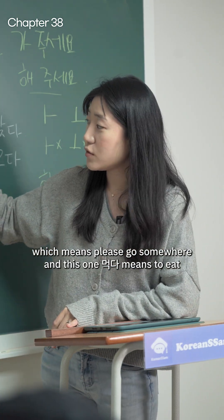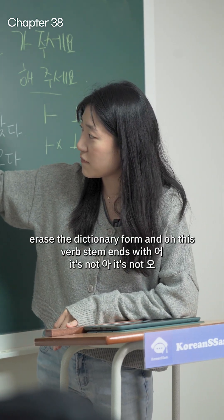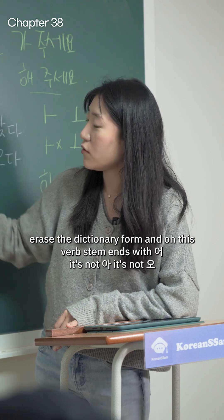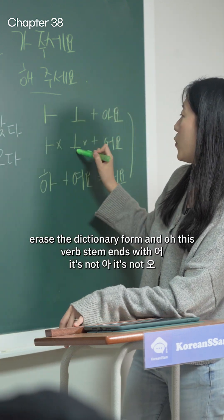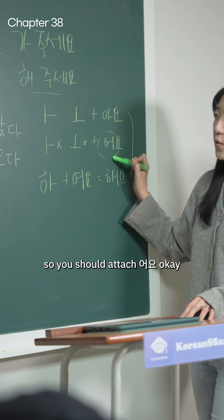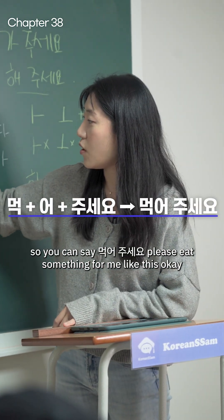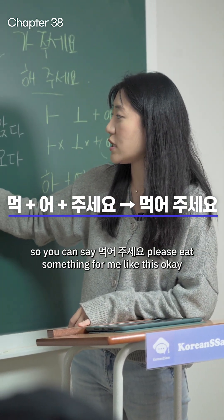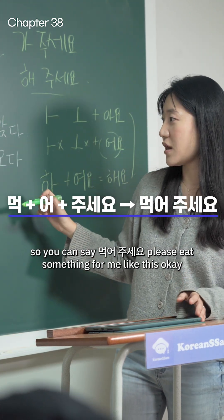먹다 means to eat. Erase the dictionary form 다. This verb stem's vowel ends with 어 — it's not 아 and it's not 오 — so you attach 어요. So you say 먹어 주세요, meaning please eat something for me.